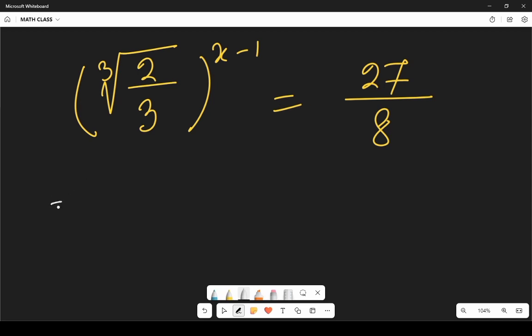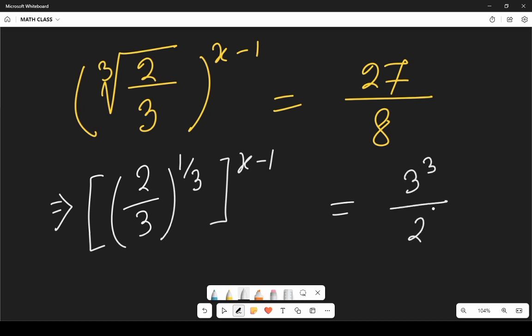First of all we can write cube root as 2 by 3 whole to the power 1 third whole to the power x minus 1 and we can write 27 as 3 cube and 8 as 2 cube.